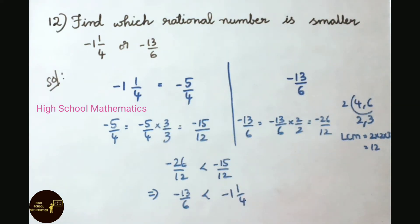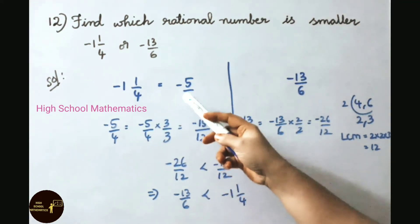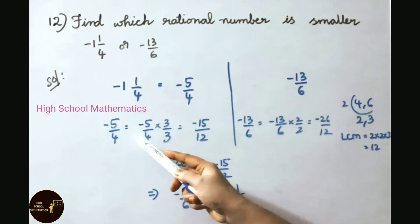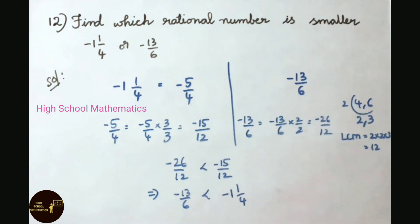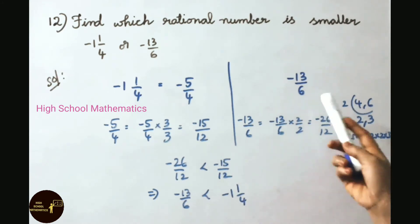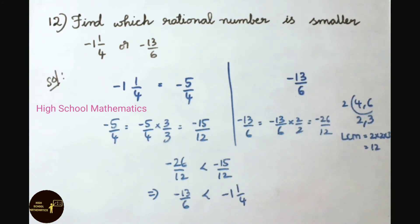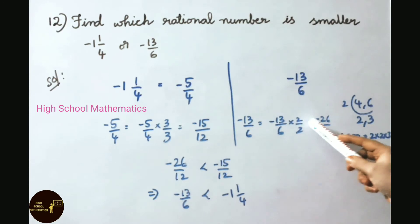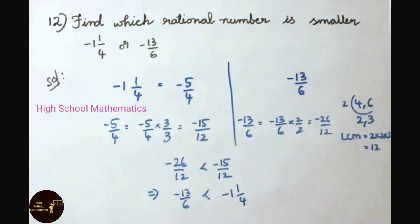Minus 1 and 1/4 is a mixed fraction. Converting to improper: 4 ones are 4, 4 plus 1 is 5, so it becomes minus 5 by 4. Multiply numerator and denominator by 3 to get denominator 12: minus 5 into 3 is minus 15, and 4 into 3 is 12, giving minus 15 by 12. For minus 13 by 6, multiply numerator and denominator by 2: minus 13 into 2 is minus 26, and 6 into 2 is 12, giving minus 26 by 12.